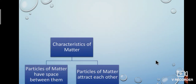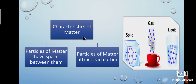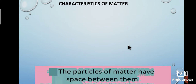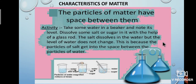Next, we will learn about the characteristics of matter. There are two characteristics: first, the particles of matter have space between them; second, particles of matter attract each other. Let us see the first characteristic. Take some water in a beaker and note its level. Dissolve a spoon of sugar and stir it with a glass rod. Now check the beaker — the sugar completely dissolves and the water level does not change. This is because the particles of sugar get into the space between the particles of water. From this we confirm that matter contains space.